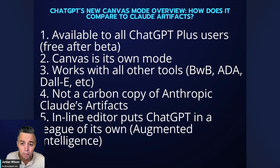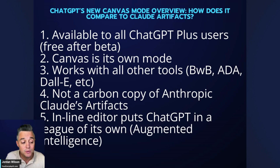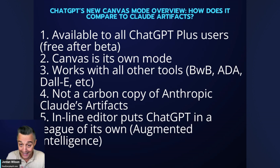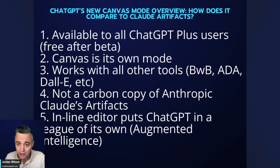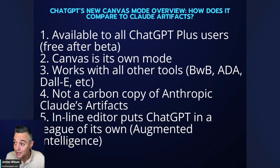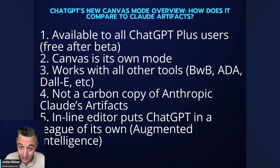Number two: Canvas is its own mode — when you start a new chat in ChatGPT you have to make sure to select that mode. Number three: unlike OpenAI's o1 preview, o1 mini, and the new advanced voice mode, Canvas works with all the other tools. Advanced voice mode doesn't support uploading files or Browse with Bing, but Canvas does — it plays nicely with all other ChatGPT modes.